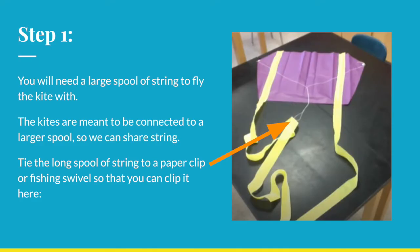Let's explain how to fly the kite. You will need a large separate spool of string to fly your kite with. The kites are designed with a shorter string, and you attach the large spool to the short string by hooking it on with a paper clip.